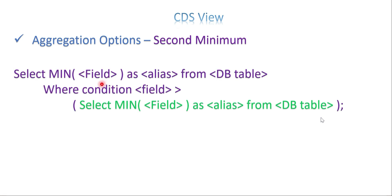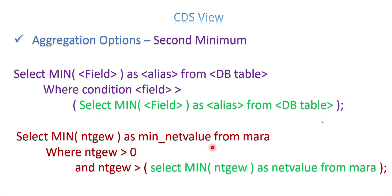Suppose you want to get the second minimum - there are business scenarios where you need the second minimum or second maximum. In that case, we use a subquery. The idea is the SELECT query should return the second minimum value from a particular field, meaning the value should be greater than the first minimum value. So: SELECT MIN(field) FROM table WHERE field > (SELECT MIN(field) FROM table). This subquery gets the first minimum, then the outer query finds the next value greater than it.